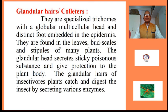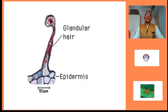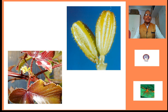Glandular hairs or collators: They are specialized trichomes with a globular multicellular head and a distinct foot embedded in the epidermis. They are found in leaves, bud scales and stipules of many plants. Their glandular head secretes sticky poisonous substances and gives protection to the plant body. The glandular hairs of insectivorous plants catch and digest insects by secreting various enzymes. These are the glandular hairs with head-like structures arising from the epidermis. These are the glandular hairs of Drosera arising on the petiole leaves.